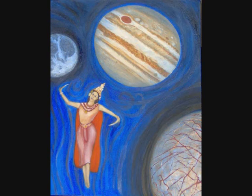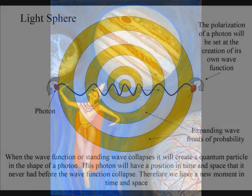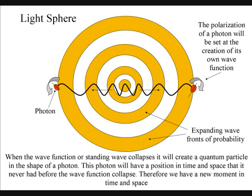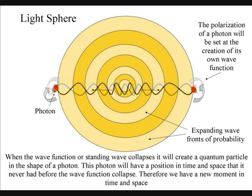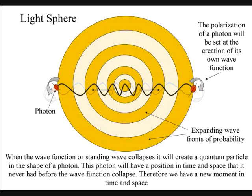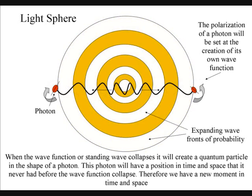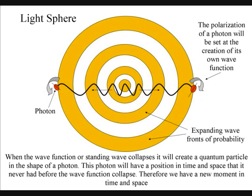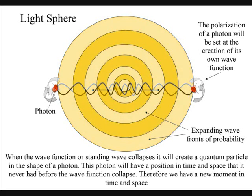However insane this theory might sound, it can explain the paradoxes and weirdness of quantum mechanics. When the wave function or standing wave collapses, it will create a quantum particle in the shape of a photon. This photon will have a position in time and space that it never had before the wave function collapse. Therefore we have a new moment in time and space.